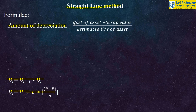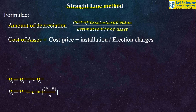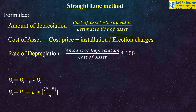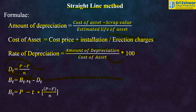The formula for amount of depreciation is: (cost of asset minus scrap value) divided by estimated life of asset. Cost of asset is determined by cost price plus installation or erection charges. Rate of depreciation equals amount of depreciation divided by cost of asset, multiplied by 100 — expressed as a percentage. Dt = (P − F) / N. Bt = Bt−1 − Dt. Also, Bt = P − t × (P − F) / N.